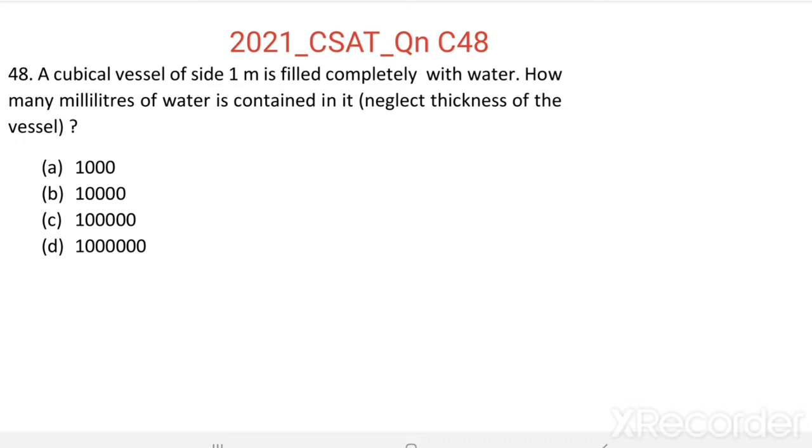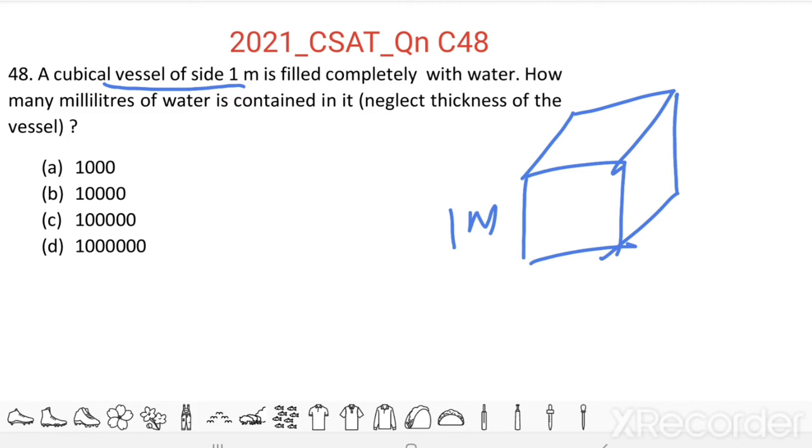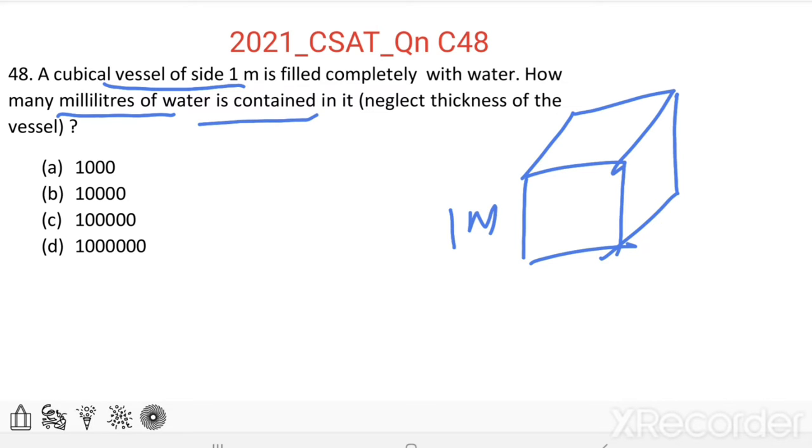A cubical vessel of 1 meter side, completely filled with water. How many milliliters of water is contained in it? Volume of water in the vessel is equal to volume of the vessel, which is equal to 1 meter cube.